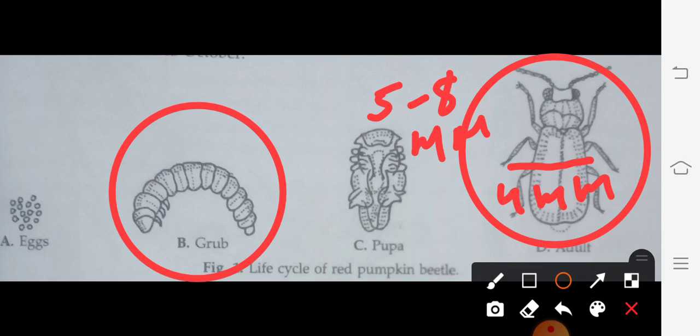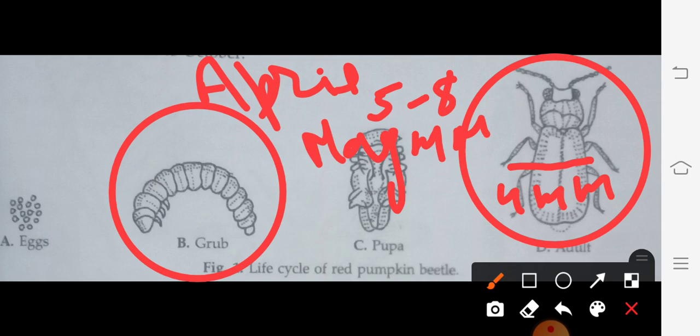We are talking about habits. The adult insects cause main damage to the vegetables in April to May. They have biting and chewing type of mouthparts. The adults hibernate from November to February. What do we call hibernate? It is winter sleep.